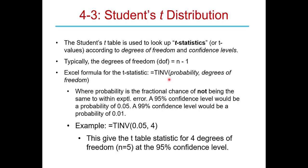You need to open a parenthesis and give Excel two numbers: a probability related to the confidence level, and the degrees of freedom. The probability is the fractional chance of not being within experimental error. A 95% confidence interval means a 5% chance of being outside that level, so the probability is 0.05. For 99%, it would be 0.01.